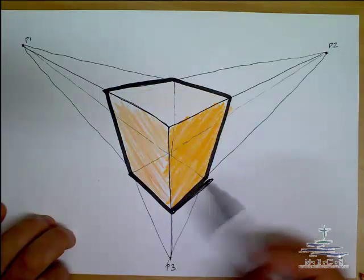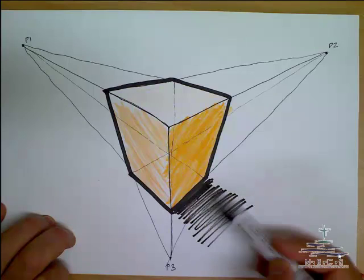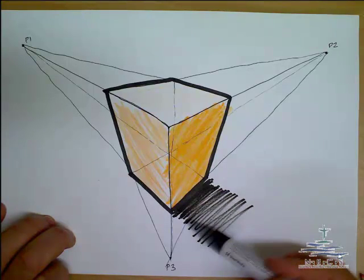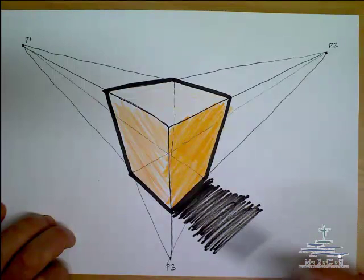And also we can just add a bit of a drop shadow. So start nice and dark and you can just move that out as you go. It just sort of puts it on a plane and makes it not look like it's floating in thin air.